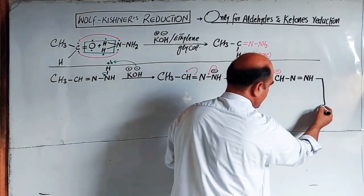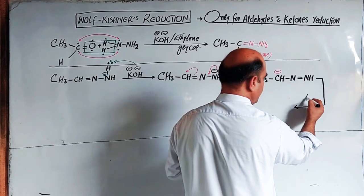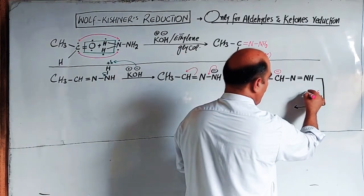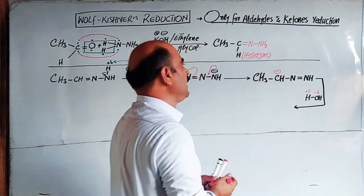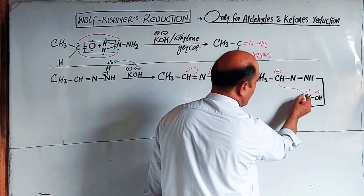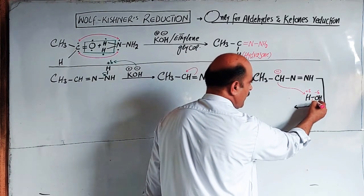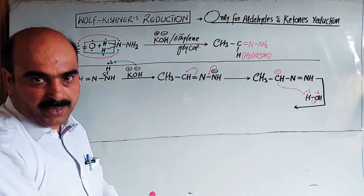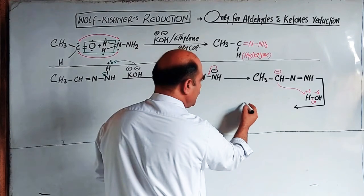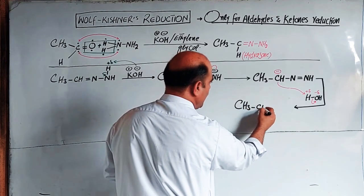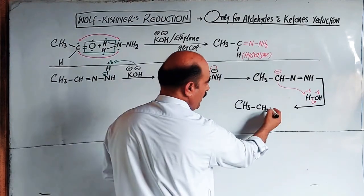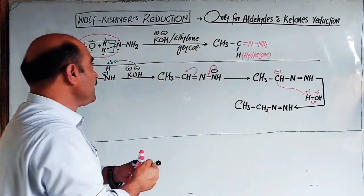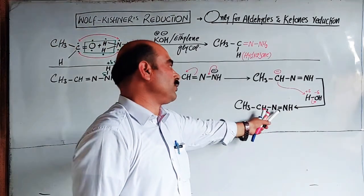Hydrolysis now takes place. The negatively charged carbon is attacked by hydrogen from water (H2O). The oxygen of water provides a hydrogen ion; the electron pair shifts toward oxygen. The hydroxide ion is removed, giving the final product: CH3-CH3 (ethane). The basic medium (KOH) facilitates this hydrolysis step.